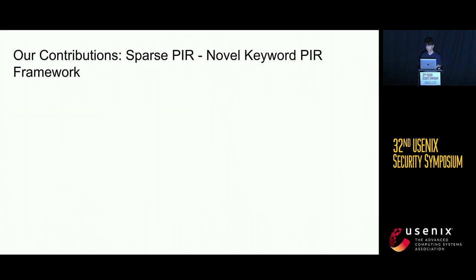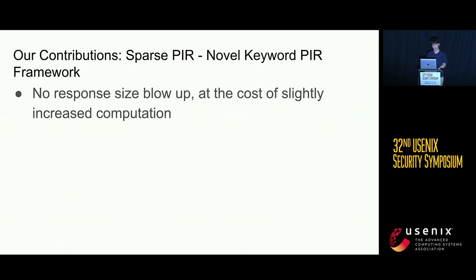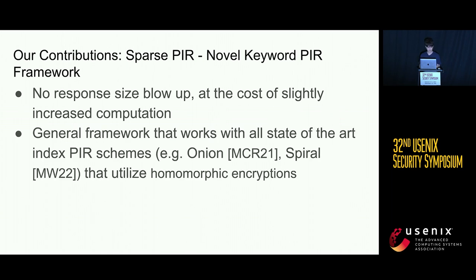We present our main contribution called sparse PIR. It's a novel keyword PIR framework that has no response size blowup, at the cost of slightly increased computation. It's a general enough framework to work with all state-of-the-art index PIR schemes such as Onion and Spiral — schemes that utilize homomorphic encryption.